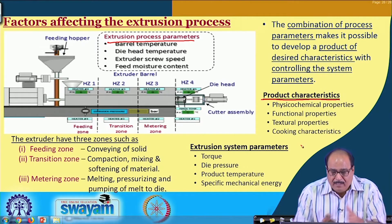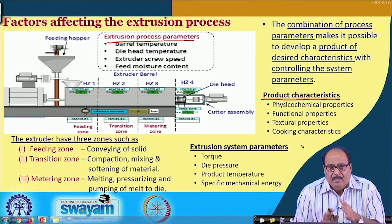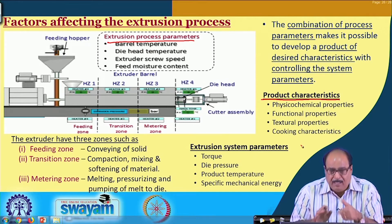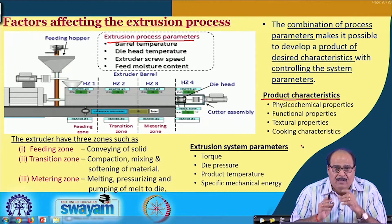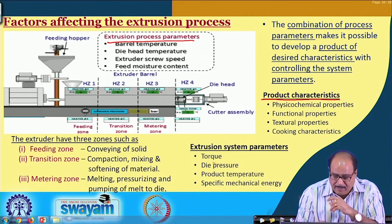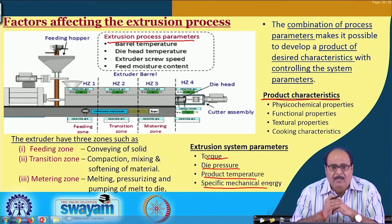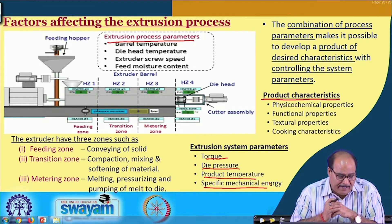The product characteristics include physical chemical properties, functional properties, textural characteristics, and cooking characteristics. These process parameters influence the system parameters, which are the torque, die pressure, product temperature, specific mechanical energy, and so on.